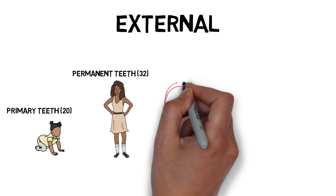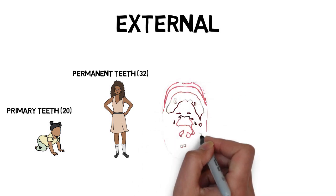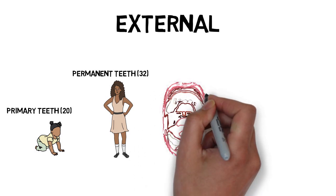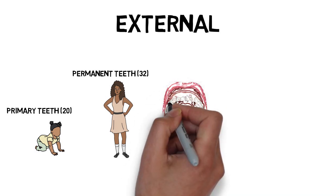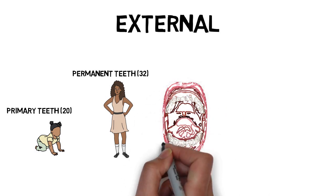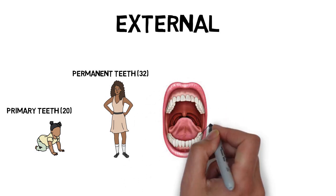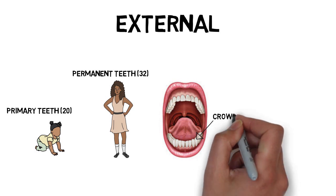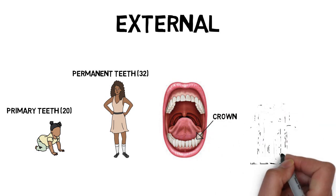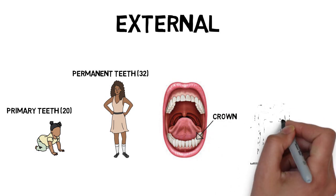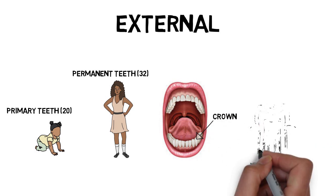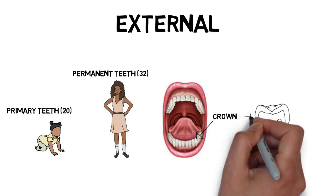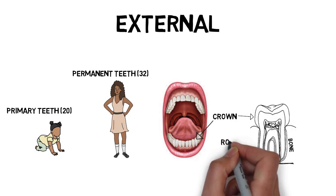There are two components of a tooth when we look at it externally. First, there is the crown, which is visible when we look inside the oral cavity. Then there is the root, which is not visible to the naked eye because it is embedded in the socket inside our gums. So there are basically two portions: the crown, which is visible to us, and the root, which is not visible. I'll be covering this topic in more detail in the next lecture.